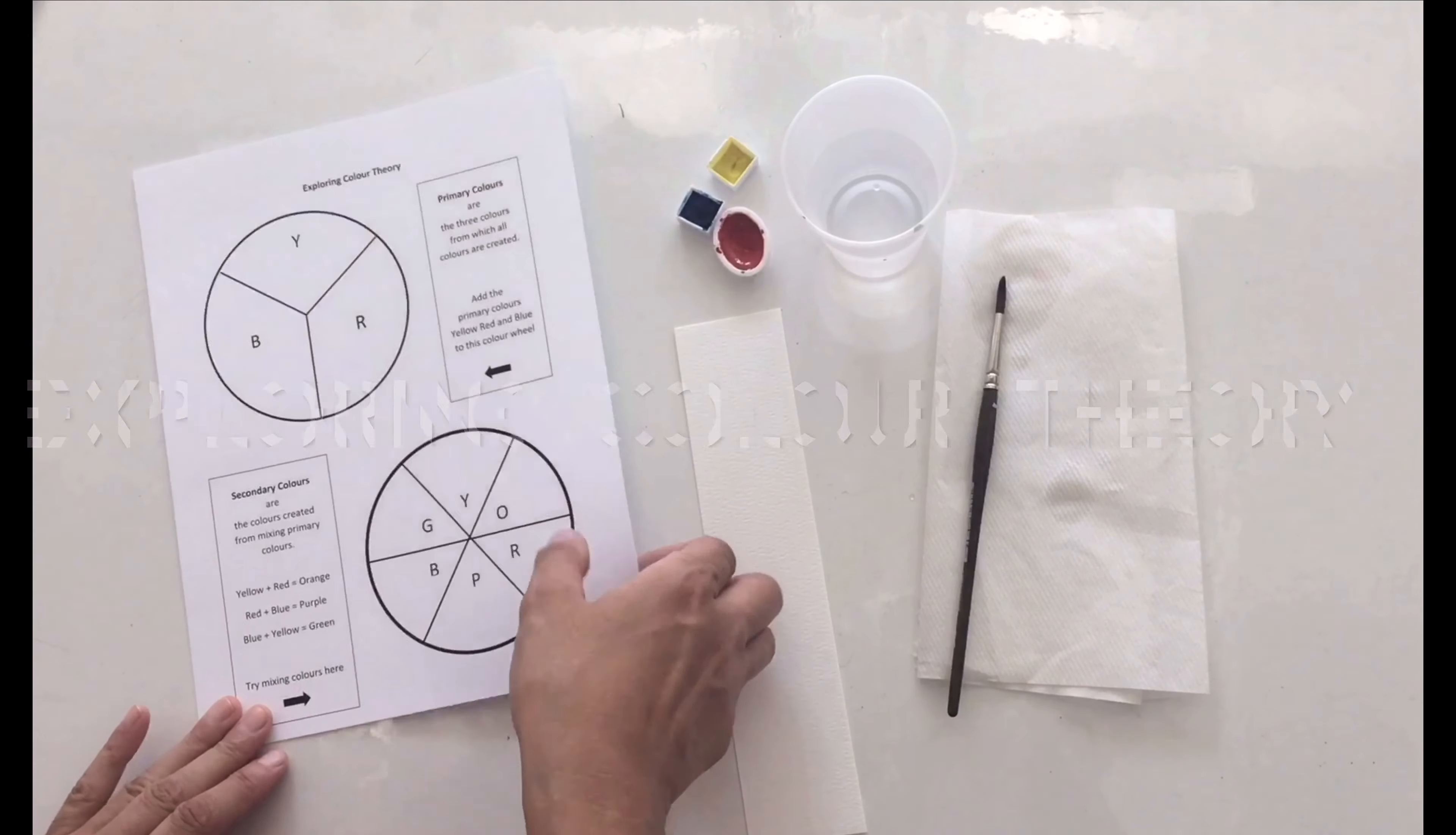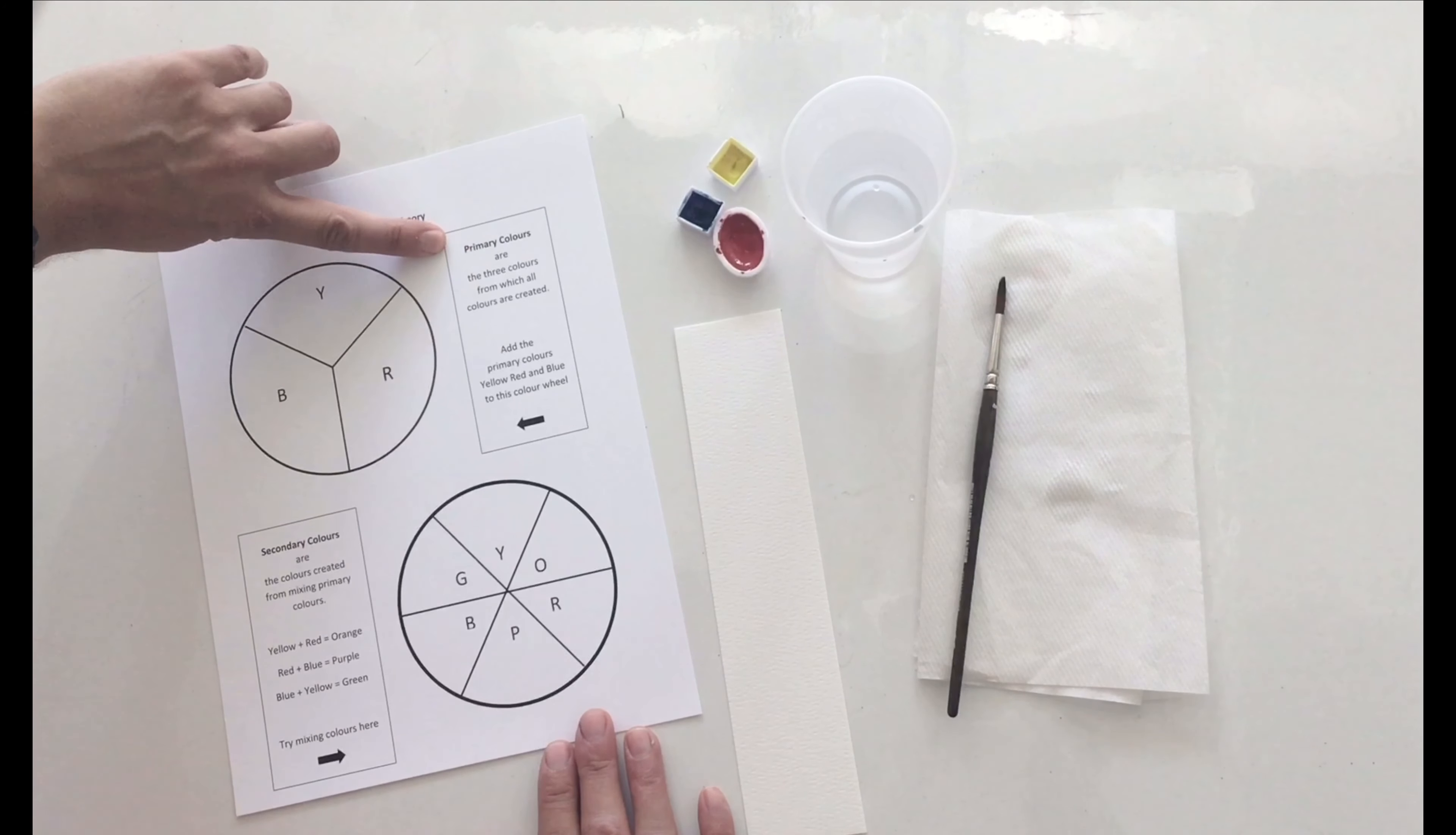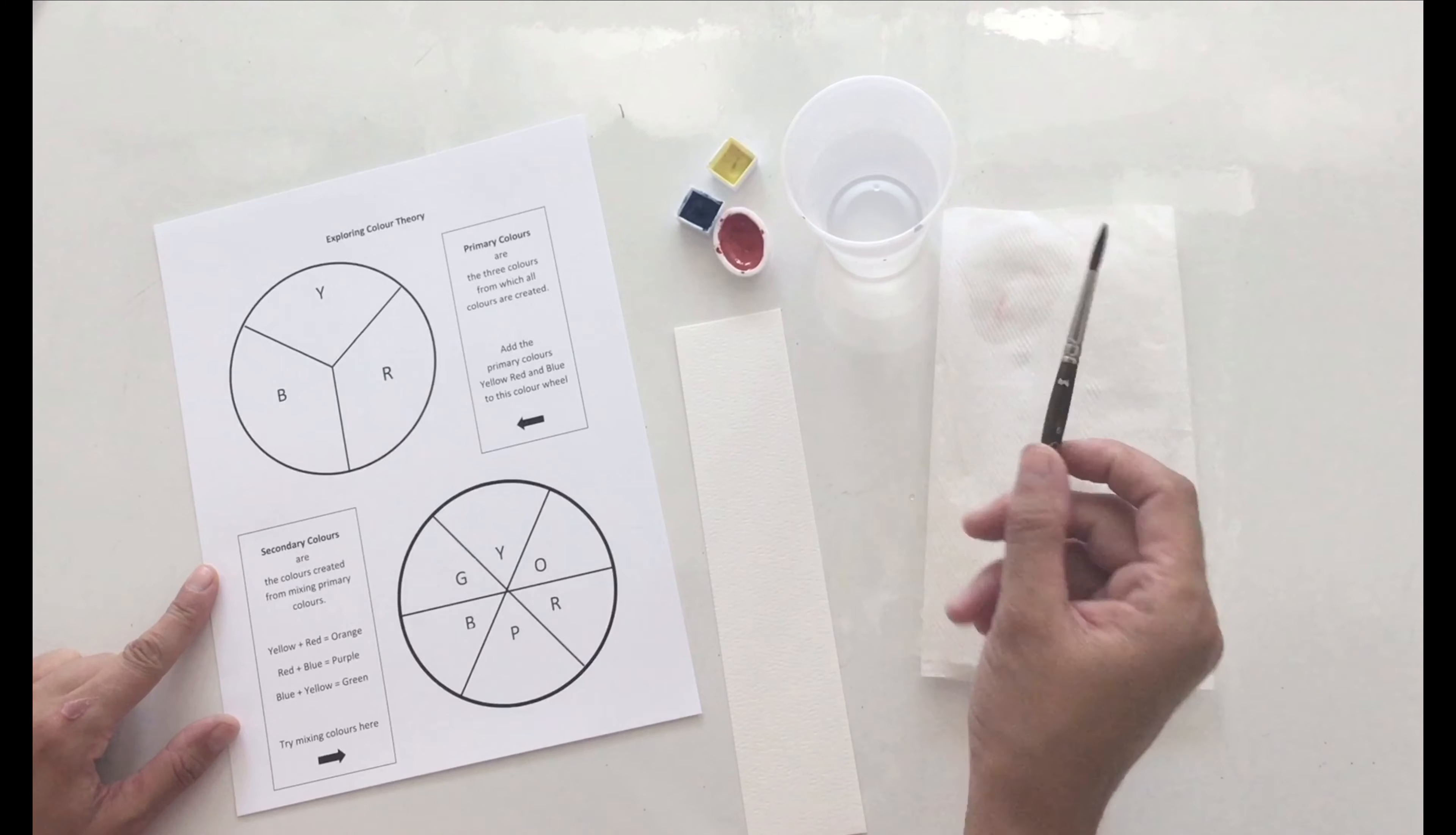Hi everyone, today we're going to be exploring color theory. We're going to look at primary colors, which are the colors that we can blend to create other colors, and then secondary colors, which are the colors that are created from those primary colors.